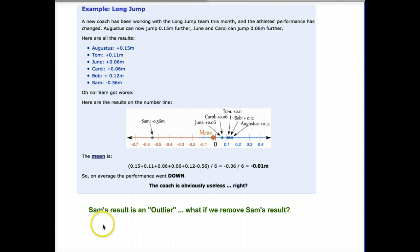So let me give you an example. In this example, this is a long jump example. So a new track coach was working with his team, and their performances have gotten better. And up here are the results of the athlete's performances. So we have Augustus, he improved his distance by 0.15 meters. There's Tom, June, Carol, Bob. Everybody has improved except for Sam. Sam, unfortunately, has gotten worse. So if we plot those on a number line, here's Sam. Clearly, he's an outlier. Everybody else is clustered together.